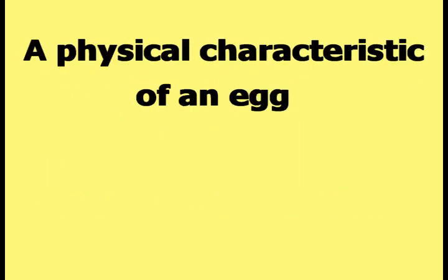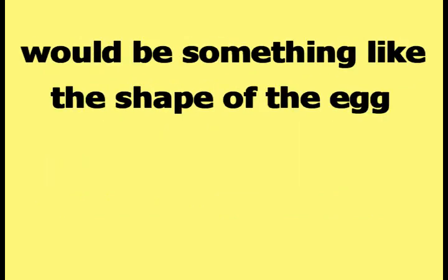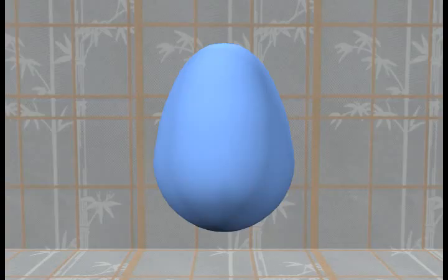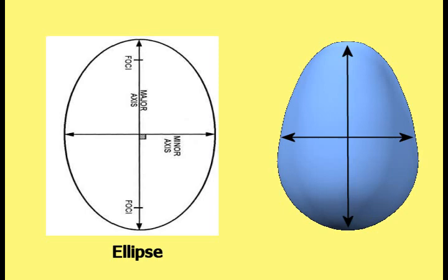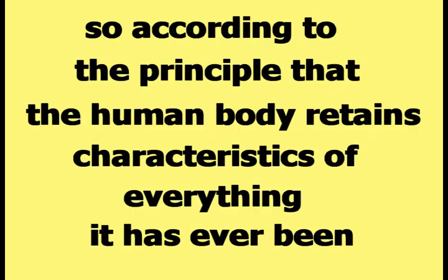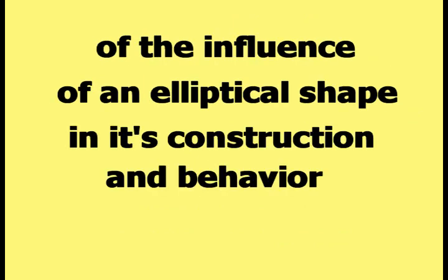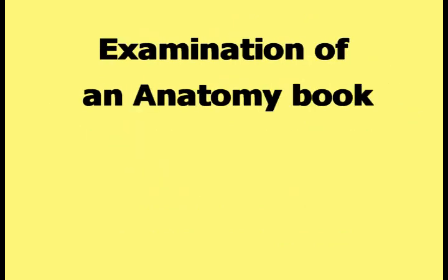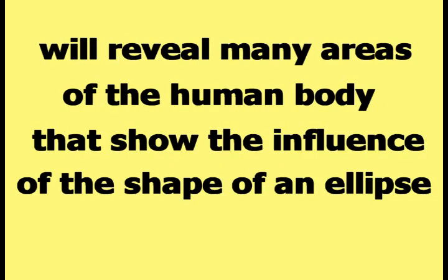A physical characteristic of an egg would be something like the shape of the egg. An egg has an elliptical shape, so according to the principle that the human body retains characteristics of everything it has ever been, the mature human body should show some sign of the influence of an elliptical shape in its construction and behavior. Examination of an anatomy book will reveal many areas of the human body that show the influence of the shape of an ellipse.